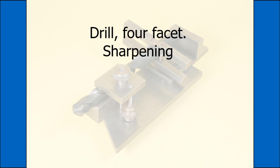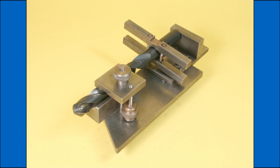The easiest way of describing the form at this stage is to say it closely follows the form of an end mill, but it is more complex than that. As with an end mill, the angle directly behind the cutting edge is called the primary clearance and the steeper one the secondary clearance.